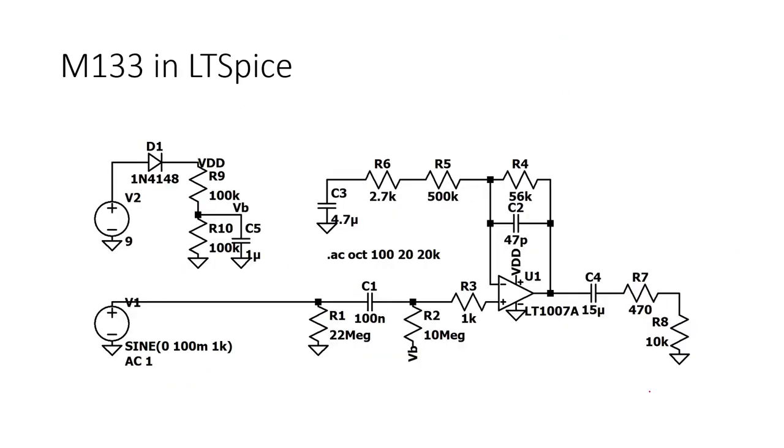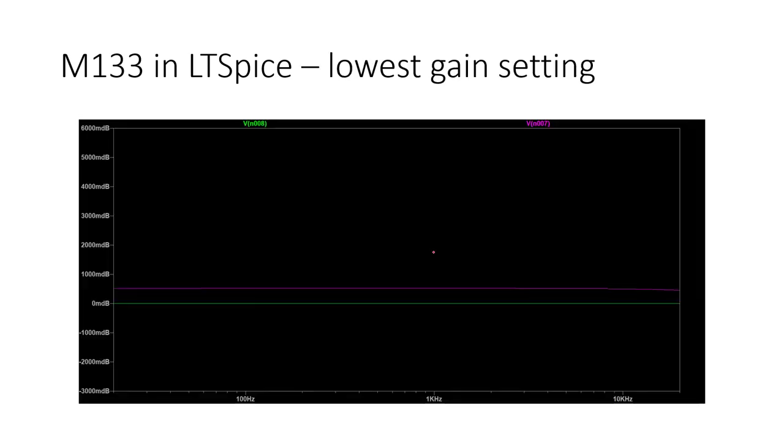On this slide, you can see a recreation of the circuit in LTSpice. Again, I'm running an AC frequency sweep from 20 Hz to 20 kHz. As you can see in the slide with the lowest gain setting, that means the volume knob, the potentiometer, was turned all the way to the left. The gain is not zero, but it's at about half of a dB, which is almost nothing.